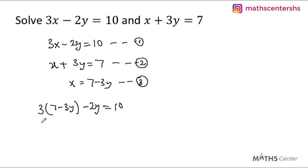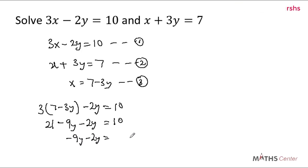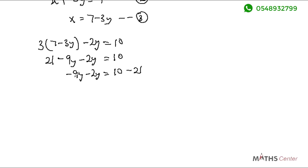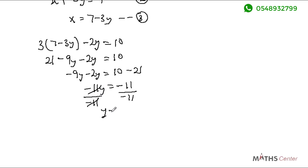Now let's expand the bracket here. 3 times 7 will give us 21. 3 times negative 3y will give us negative 9y, minus 2y is equal to 10. Let's group like terms here. So we have negative 9y minus 2y is equal to 10 minus 21. Negative 9 minus 2y will give us negative 11y. 10 minus 21 will give us negative 11. I'll divide both sides by negative 11, and so we have y equal to 1.